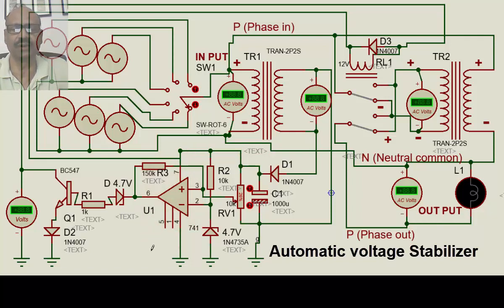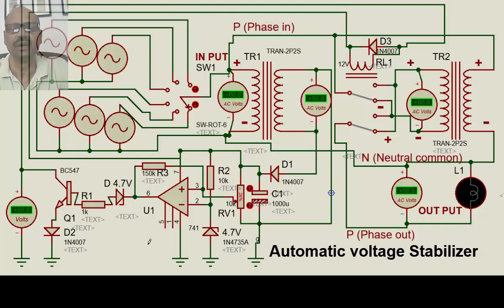We have used a 741 operational amplifier here, but any op-amp can be used — in particular LM339, 324, 358, or 393. For the purpose of understanding we have taken the 741. There is a zener diode connected from the DC supply through a resistor, so that a fixed voltage always remains at that point, irrespective of whatever input voltage is changing.